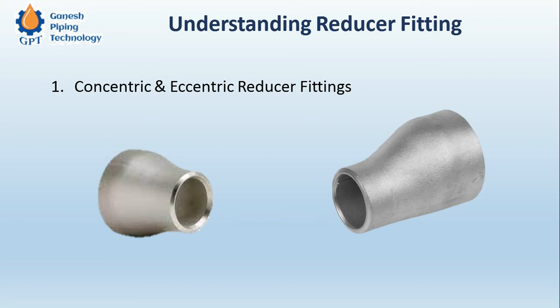Similarly, if both L1 and L2 fall in the small bore range, that is from half inch to one and a half inch, we can use socket welded fittings on both sides. So this is the standard reducer rule — L1 and L2 are either both in the large bore range or both in the small bore range.